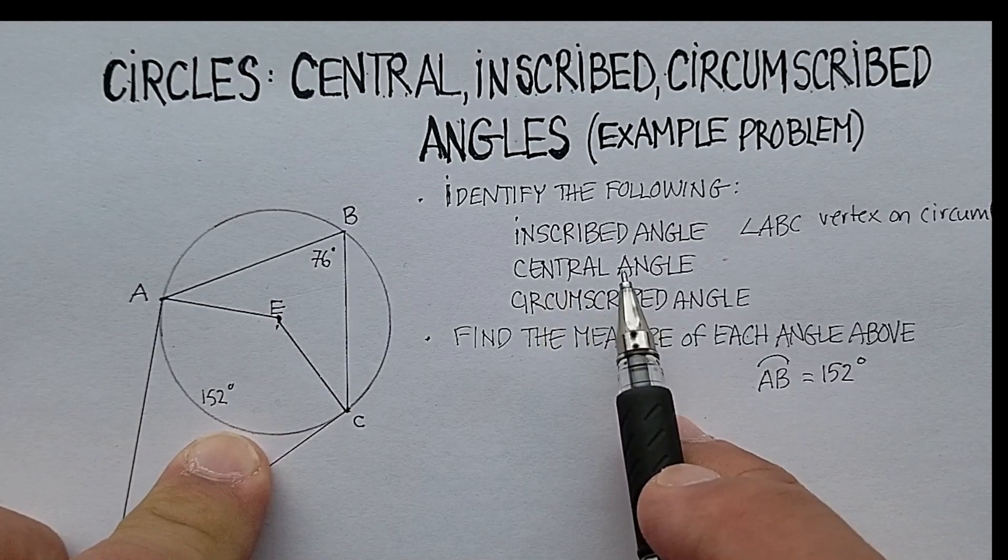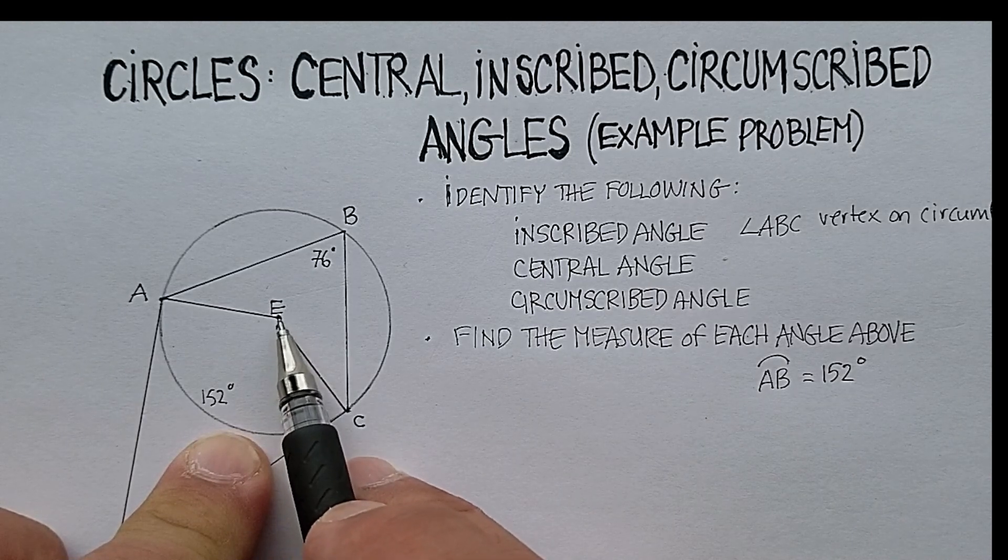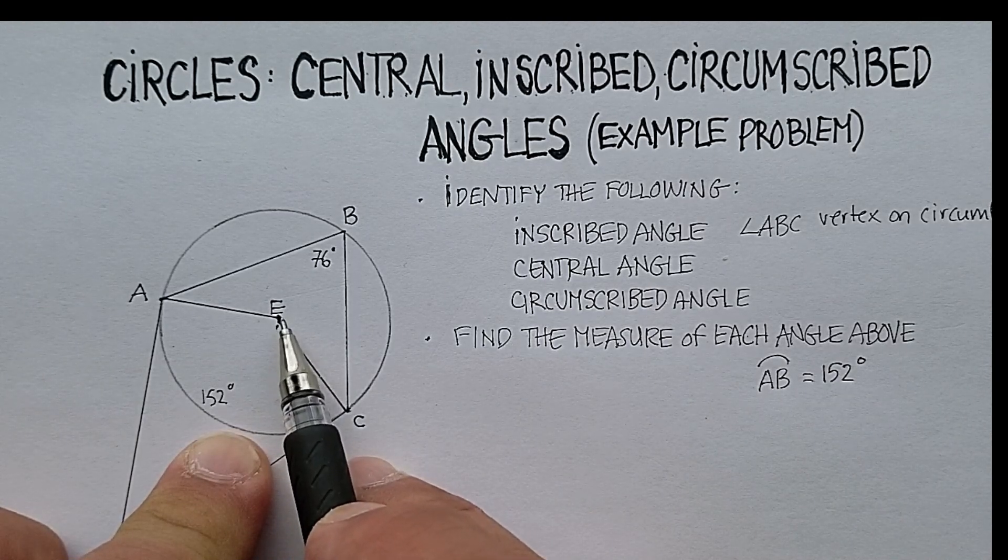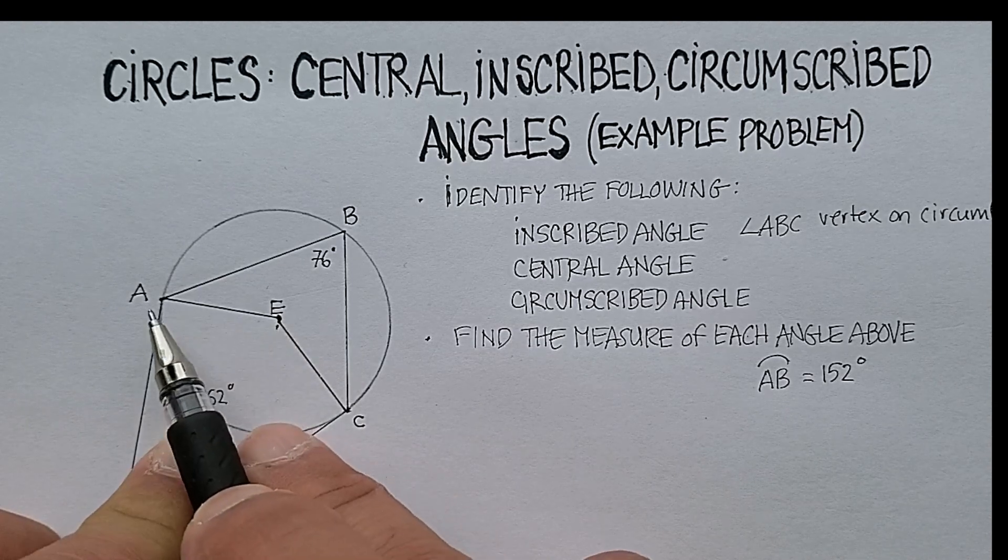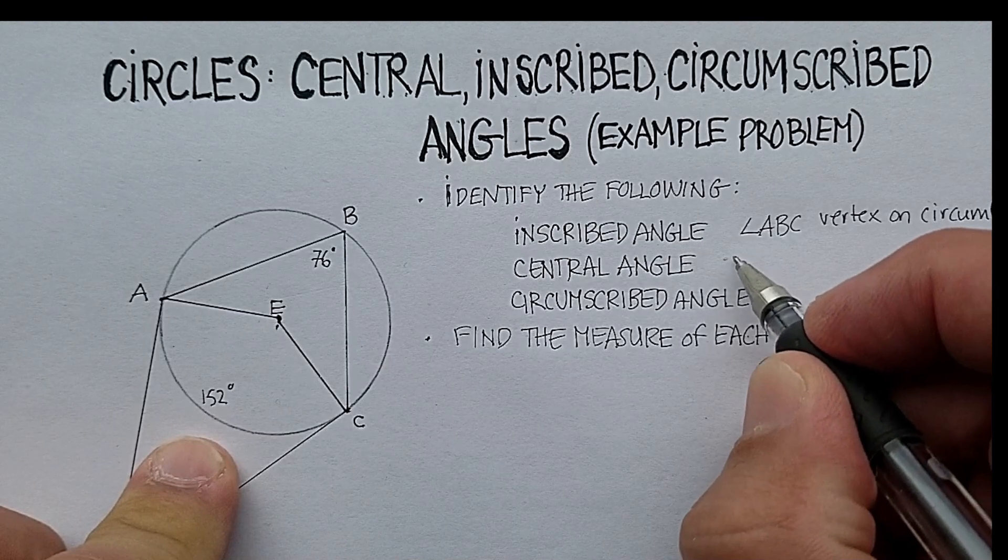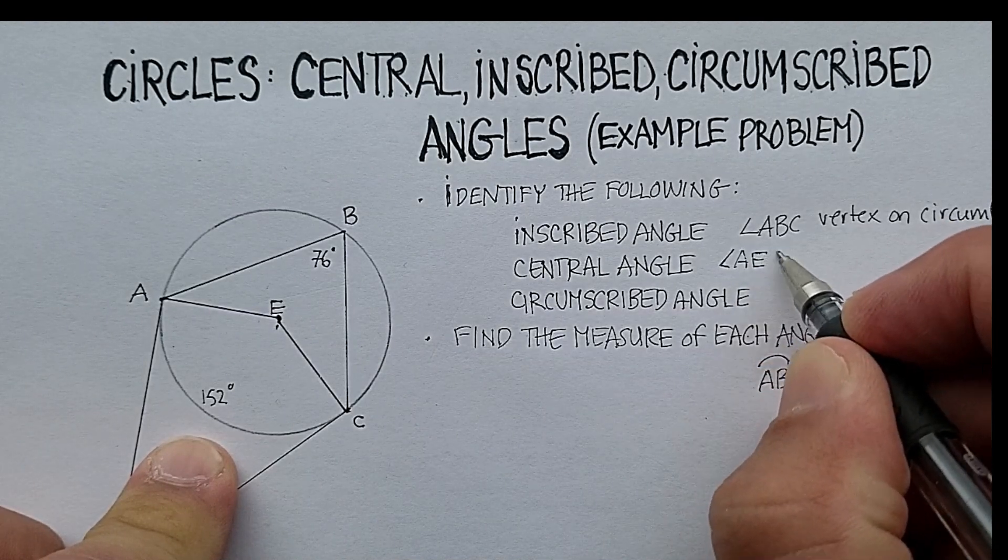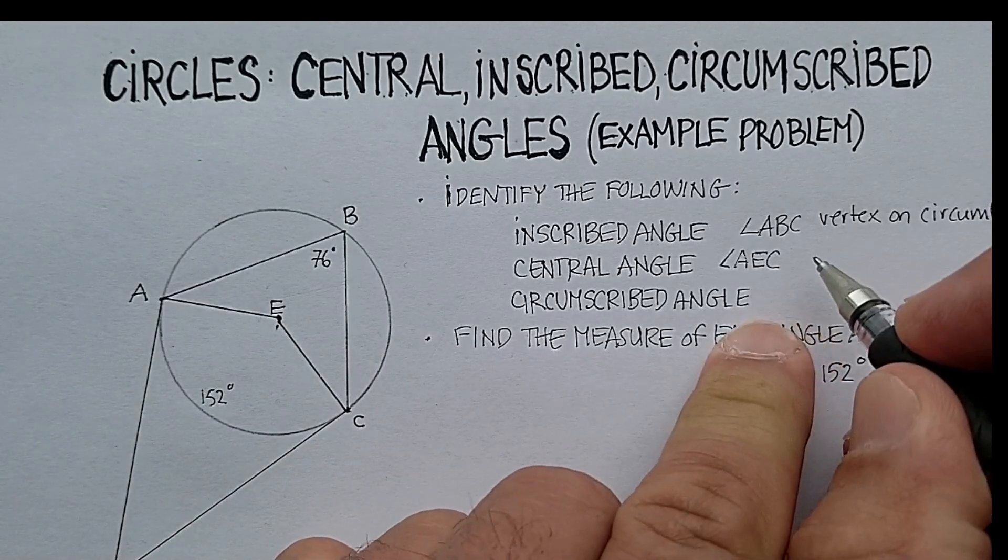So let's identify the central angle now. The central angle, remember, has the vertex starting right in the middle of the circle. So in this case, this would be angle AEC. Okay, so angle AEC, where vertex is in the center.